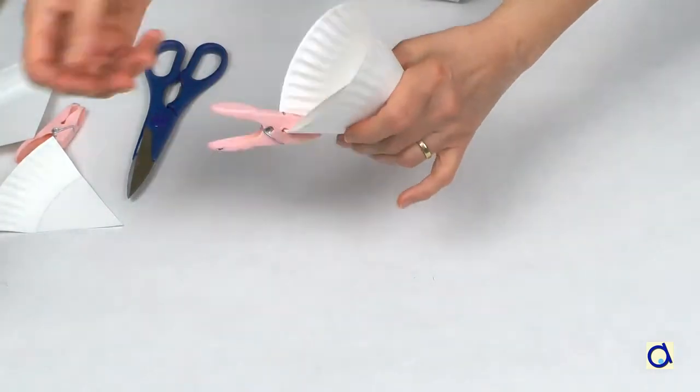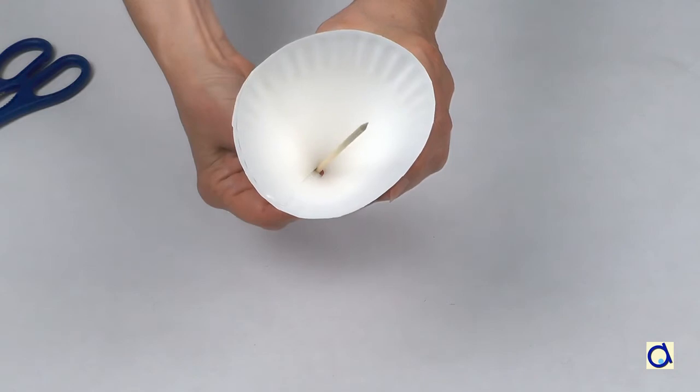When the glue is dry, you can insert a wooden skewer through the little hole in the bottom of the cone.